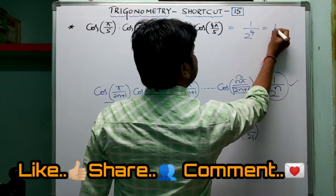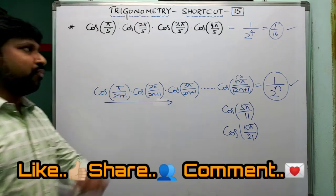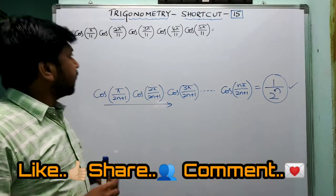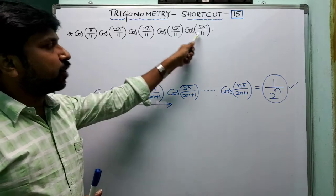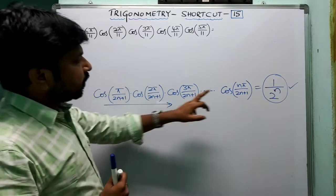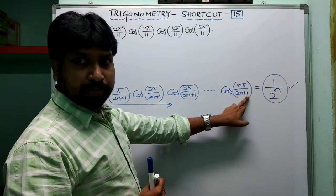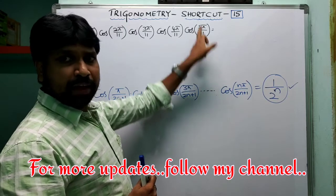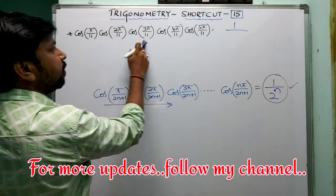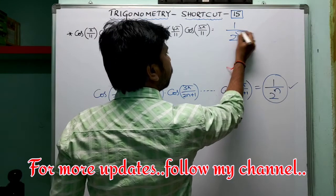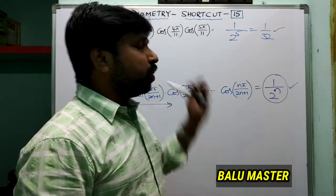Next example: cos(π/11) · cos(2π/11) · cos(3π/11) · cos(4π/11) · cos(5π/11). Is this formula applicable? Let's check: n = 5 gives 2n+1 = 11. Yes, the denominator is 11, so the formula applies. There are 5 terms, so the answer is 1/2⁵ = 1/32.